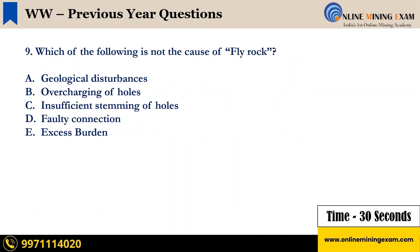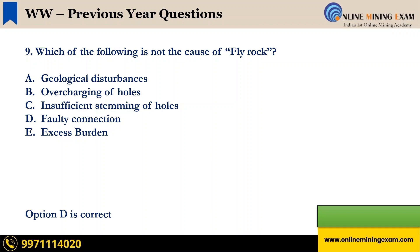Which of the following is NOT the cause of fly rock? A) Geological disturbances, B) Overcharging of holes, C) Insufficient stemming of holes, D) Faulty connection, E) Excess burden. Your time starts now. Time up. The correct answer is D, faulty connection. Next question.